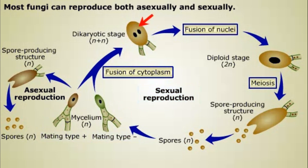In sexual reproduction, the hyphae of the mating fungi join and their cytoplasms fuse. A distinctive characteristic of fungi is that in many cases, the two haploid nuclei do not join immediately. Instead, the fungal hyphae may exist in a dikaryotic stage — the word dikaryotic has roots meaning two nuclei. The pairs of nuclei may coexist for a long time after the mating, before the haploid nuclei eventually fuse.